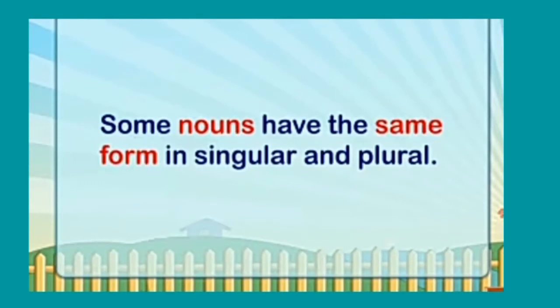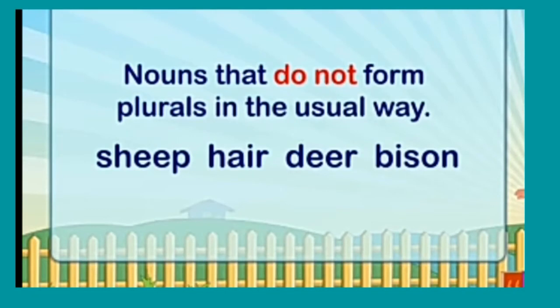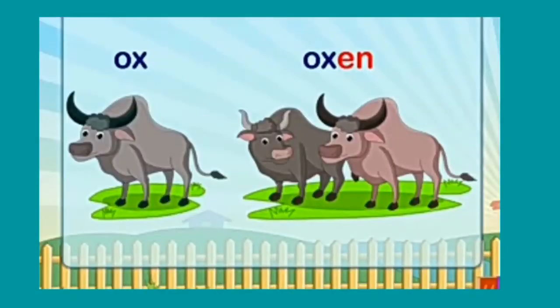Some nouns have the same form in singular and plural — nouns that do not form plurals in the usual way. For example: sheep, hair, deer, bison — inका plural form same hi hota hai. Kuch nouns irregular hote hain, jaise ki ox → oxen, man → men, tooth → teeth.